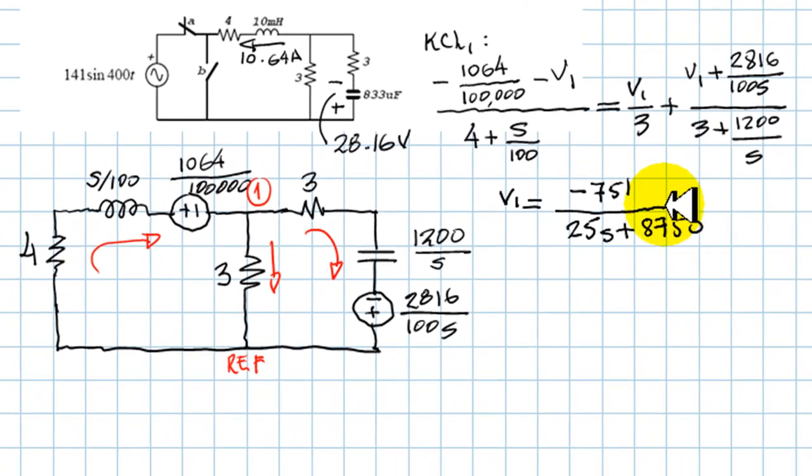Now, V1 is negative 751 divided by 25s plus 8750. But that is not the voltage we want. That is just the voltage of this node with respect to the reference. The voltage we need is the voltage in the capacitor. This voltage from here to there. That is the voltage in the capacitor. That is the voltage in this capacitor, this one.